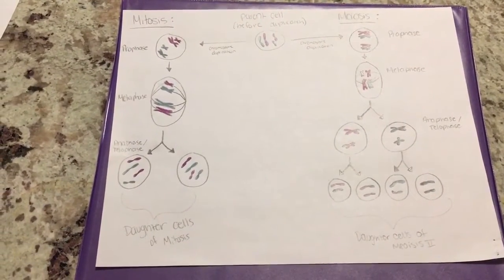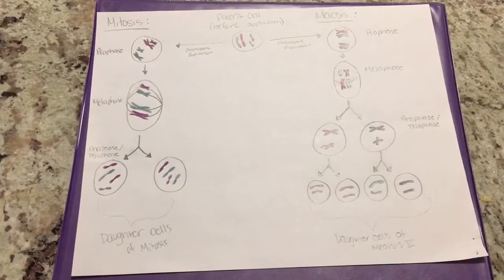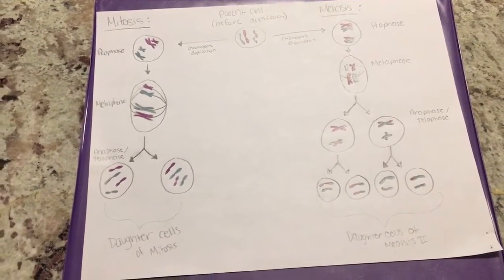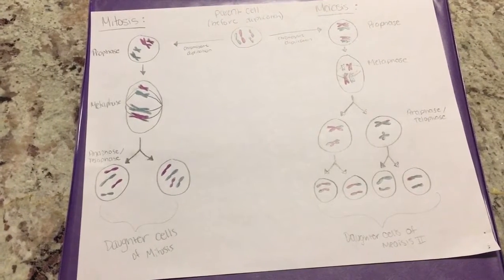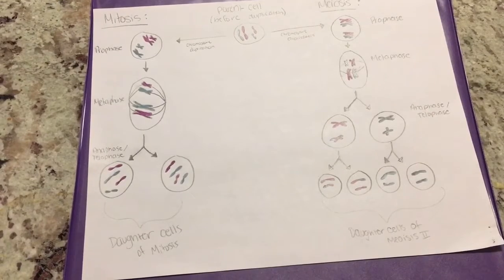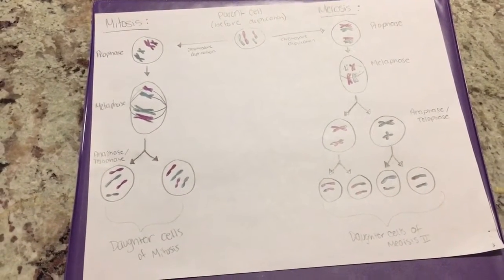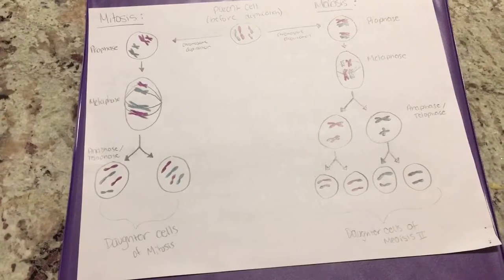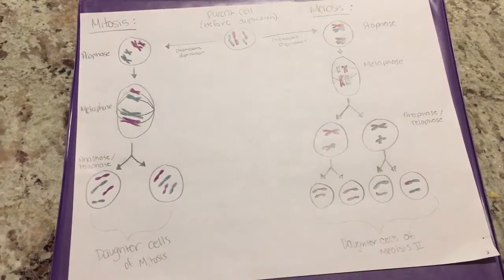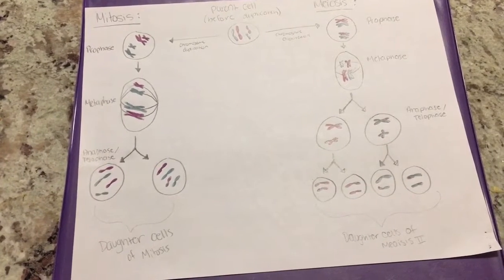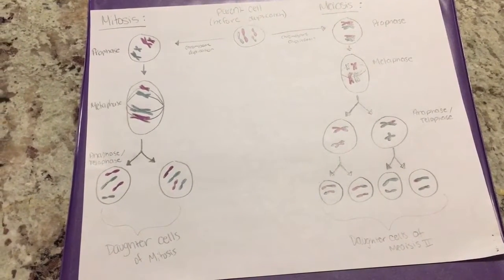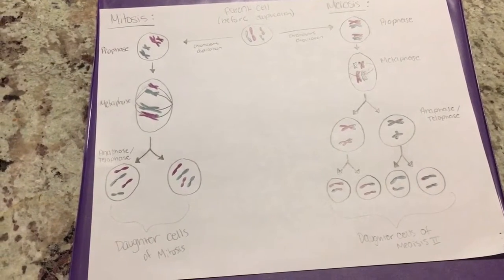Meiosis also has four main stages: prophase, metaphase, anaphase, and telophase. During prophase, the nuclear membrane dissolves and chromosomes condense from the chromatin. The centromeres of the chromosomes push apart and create a spindle. Homologous chromosomes pair up and exchange DNA in a process known as crossing over. The paired-up chromosomes are called tetrads and they result in genetic diversity.